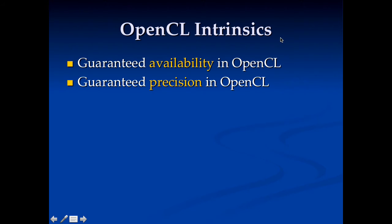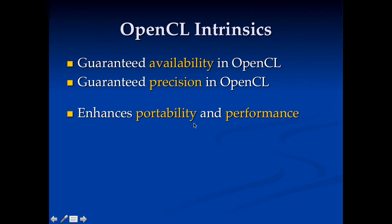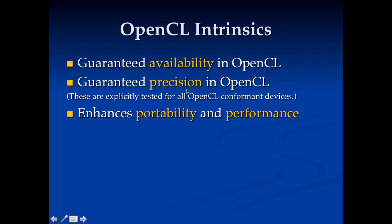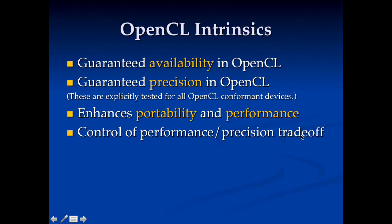The OpenCL intrinsics are really nice — something that didn't exist before OpenCL. They give you two important things: guaranteed availability, meaning anywhere you run OpenCL those library functions are there; and guaranteed precision, meaning on any OpenCL-certified device you get the same accuracy from these library functions. This enhances our ability to write portable and performant code, because we can trade off precision and performance, we know what's available, and we know how well it works. The way they guarantee precision is by testing for it when they grant OpenCL compliance.